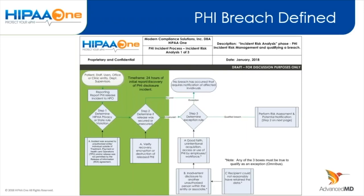If that data is encrypted, there is a very low likelihood that PHI was actually compromised, so it's considered secured. If it's secured, we can attest that no breach occurred requiring notification. That's why encryption is such a big deal. If it's unsecured, the Omnibus Rule introduced three exceptions: A) good faith unintentional acquisition by the workforce; B) inadvertent disclosure to an authorized person within the entity; C) if the recipient could not have reasonably retained the data. Any of these three qualify as an exception.